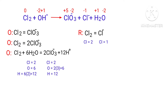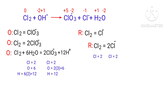Now you can balance the number of atoms in the reduction half reaction. To balance the Chlorine atoms we need to put a coefficient of 2 in front of Cl⁻. Now the number of atoms are balanced in the reduction half reaction.